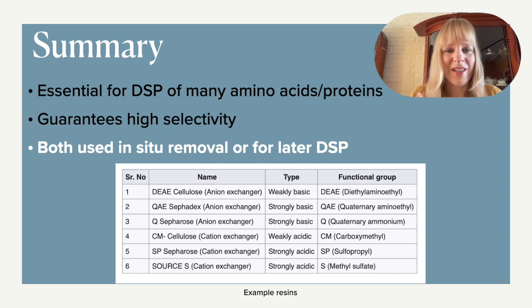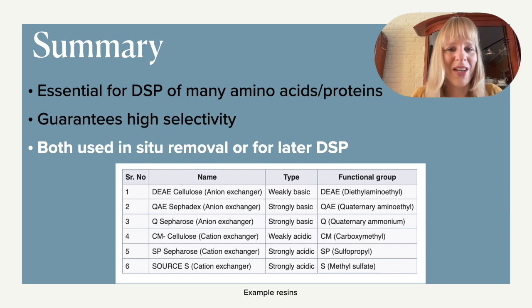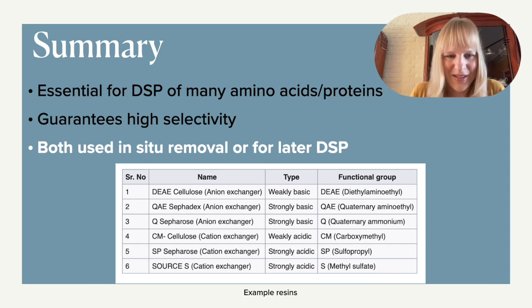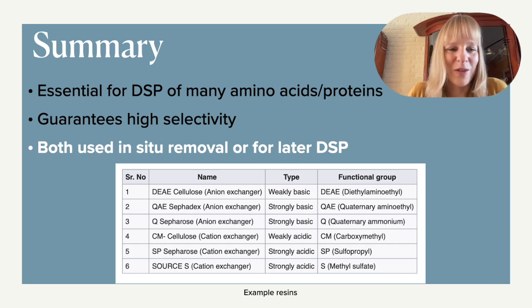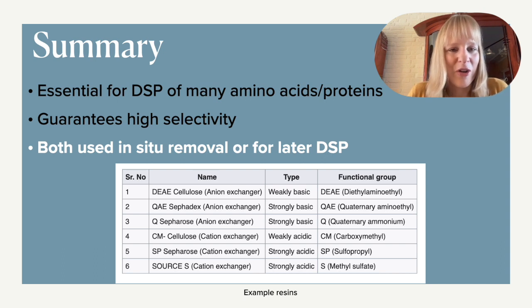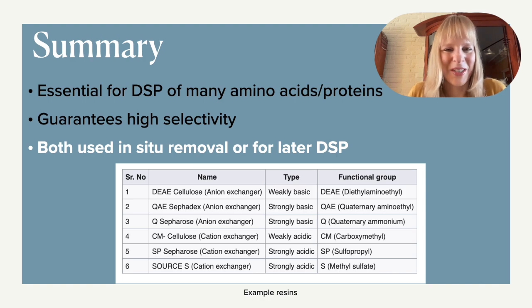Ion exchange chromatography is very important in downstream processing. Hopefully, if you work with amino acids or proteins, you've learned a little about how this works and can use it in practice. If you want to know more about downstream processing in the pharmaceutical industry, have a look at our playlist, which also covers bioplastic production and monoclonal antibody production. Thank you so much for watching.